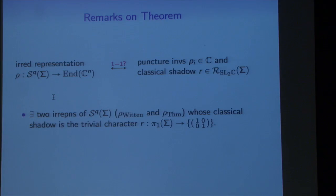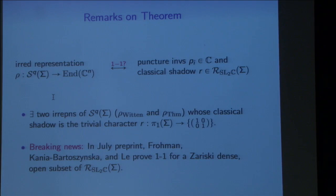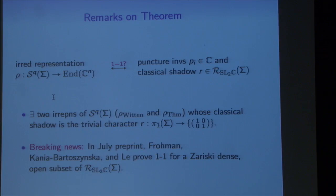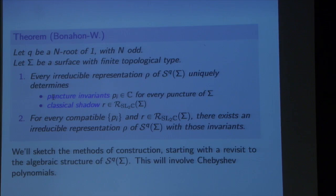This immediately begs the question: is this a one-to-one process? There are certain problematic points — for instance the trivial character, which sends everyone to the identity matrix. It turns out the representation from Witten's TQFT corresponds to the trivial character, and our construction also gives another one corresponding to the identity character, and we think they're different — though we haven't quite verified that. So it's not going to be one-to-one everywhere. As of July — very recently — it turns out this process is exactly one-to-one for a Zariski dense open set, so for almost everyone, except for clearly exceptional cases.